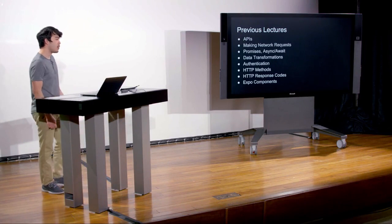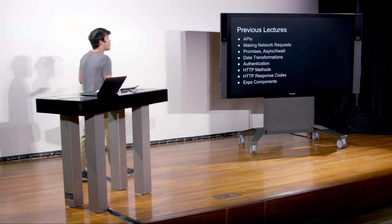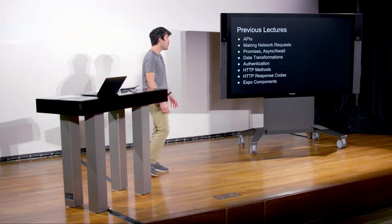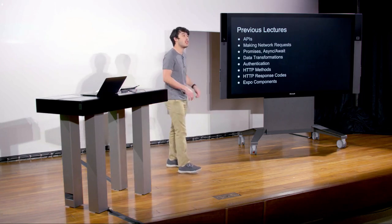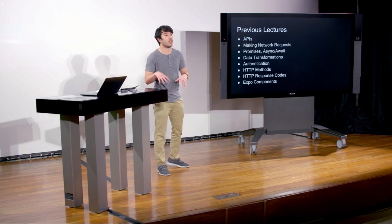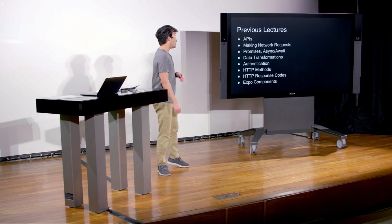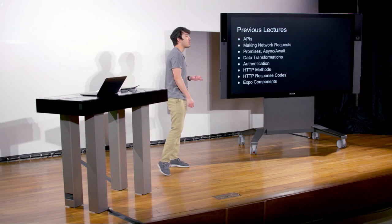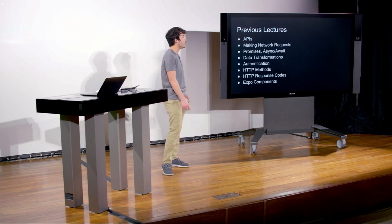In the last couple lectures, we talked about a few things. We talked about APIs, which is the way that you interface with external facing services. We talked about making network requests — how do you actually access these APIs if they're not on your own computer, maybe out in the cloud somewhere? We talked about promises and async await, which are a couple of ways to handle asynchronous actions, namely making network requests.